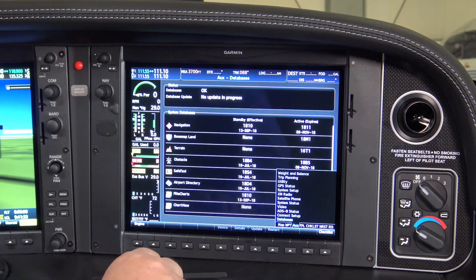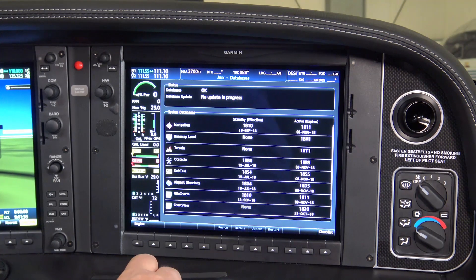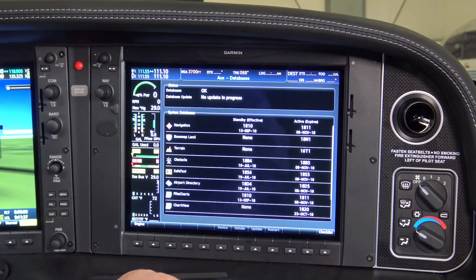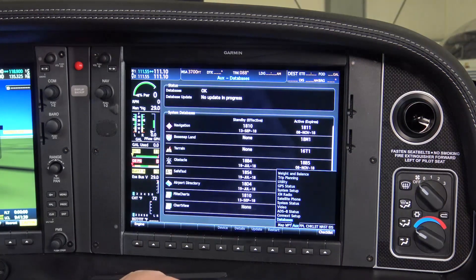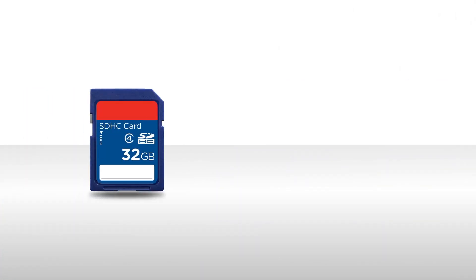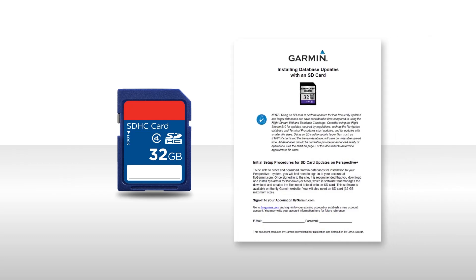If you have additional databases that were downloaded from Jeppesen, you would use the same installation process using the SD card containing the Jeppesen databases. The method you have just seen for installing databases to the G1000 NXI can be used for any update cycle and is the recommended method for installing large file database updates such as the IFR VFR charts and the terrain database. Both of these files are fairly large and will transfer faster from an SD card than through the Flightstream 510 using database concierge.